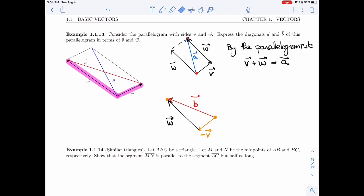They're placed tip to tail. And if I add them, I get B. I get the third side of the triangle. So B is minus V plus W. So I get W minus V if I want to place it like this.